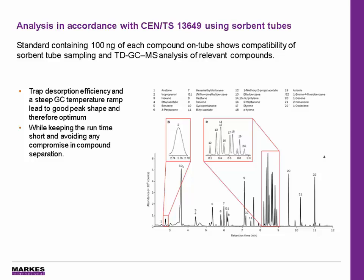On this slide, we can see the analysis of the CEN TS 13649 standard, containing 100 nanograms of each compound on the tube. This is equivalent to sampling about 300 milliliters of ambient air containing about 83 ppb of each analyte. Trap desorption and the steep GC temperature ramp lead to good peak shape and therefore optimum sensitivity, as illustrated in the case of the challenging polar compound isopropanol — we can see the cutout here showing good peak shape. This is achieved whilst keeping the runtime short and avoiding any compromise in compound separation, as visible in Section C of the chromatogram.